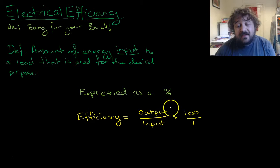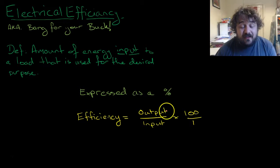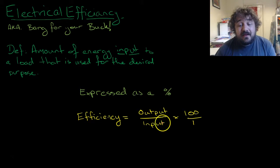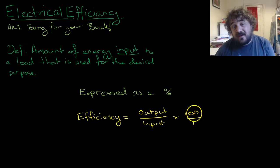Basically, we look at the energy output, what the energy is being transformed into, divided by the energy input times 100.